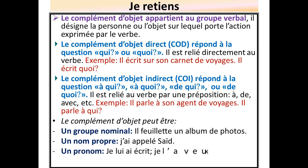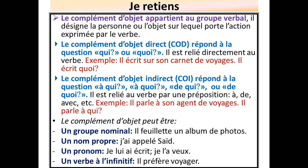Le complément d'objet peut être encore un pronom. Exemple : je lui ai écrit. Je la veux. Et il peut encore, finalement, être un verbe à l'infinitif. Exemple : il préfère voyager. Il préfère quoi ? Il préfère voyager.